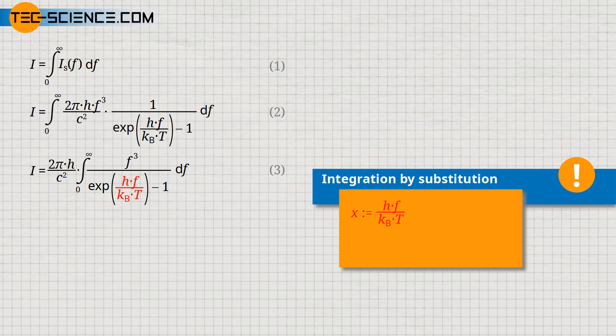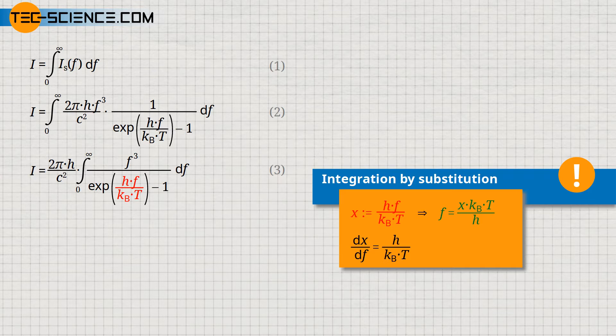According to the given definition of the introduced variable x, we can solve this equation for the frequency. We still need a connection between the differential df and dx. This relation is obtained by deriving the given definition x with respect to the variable f. This equation provides the relation between df and dx. We can now put these derived relationships into equation 3 and finally obtain equation 4.